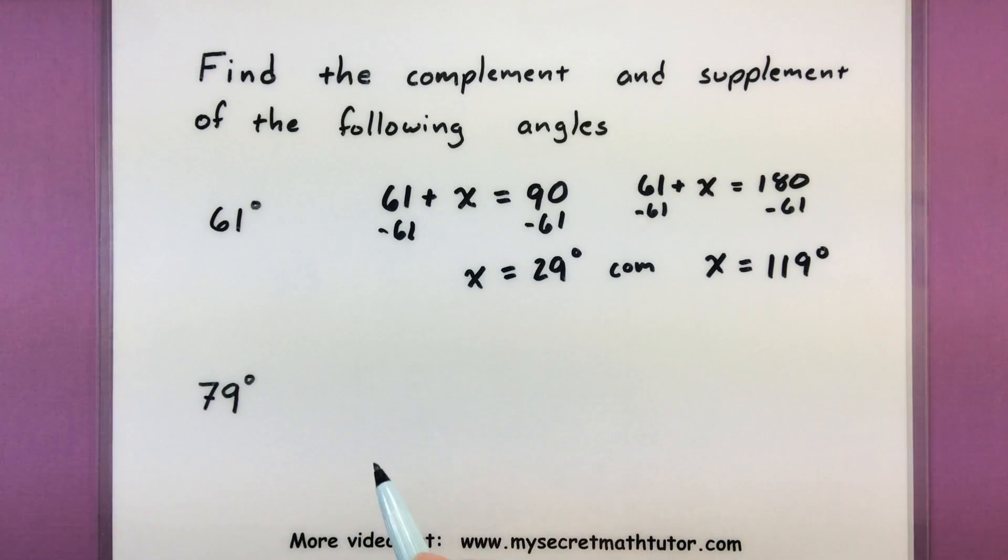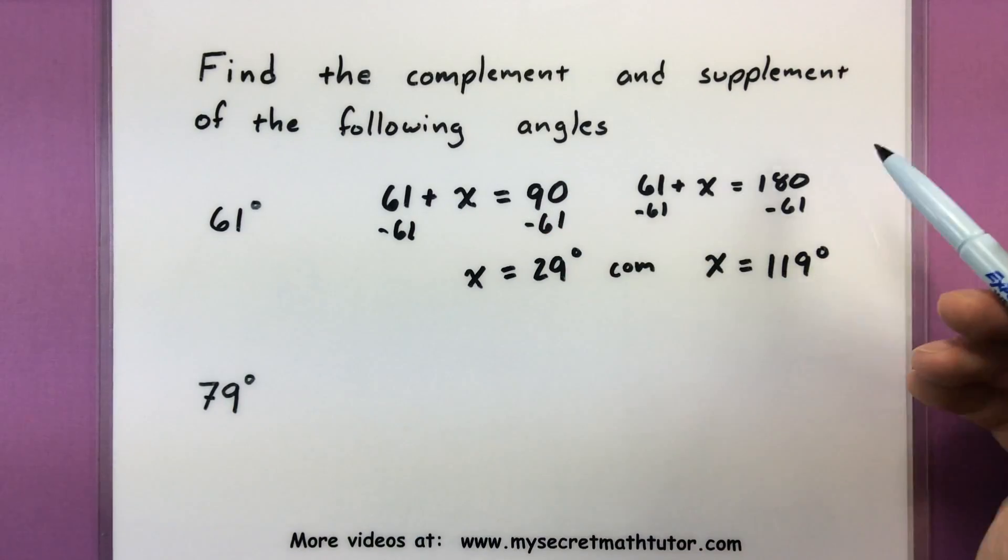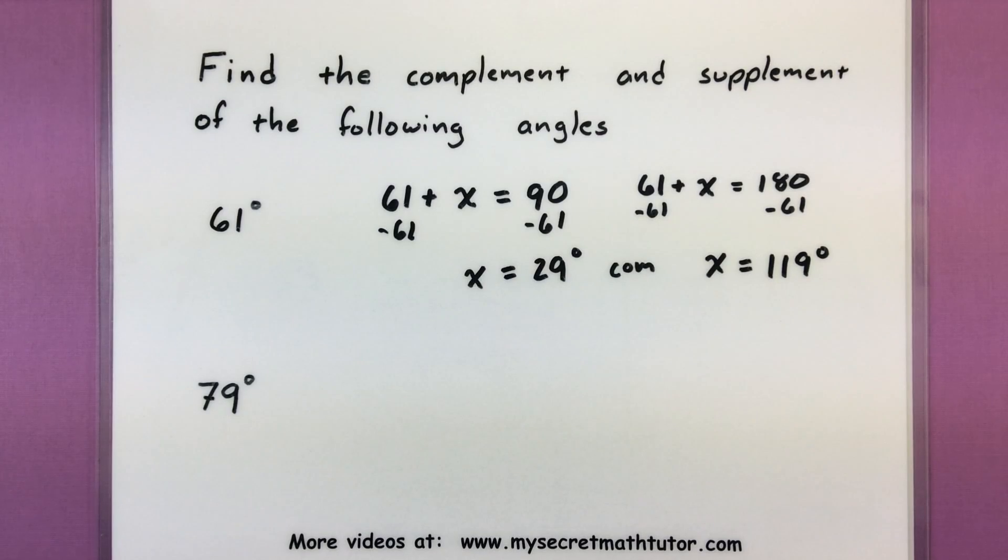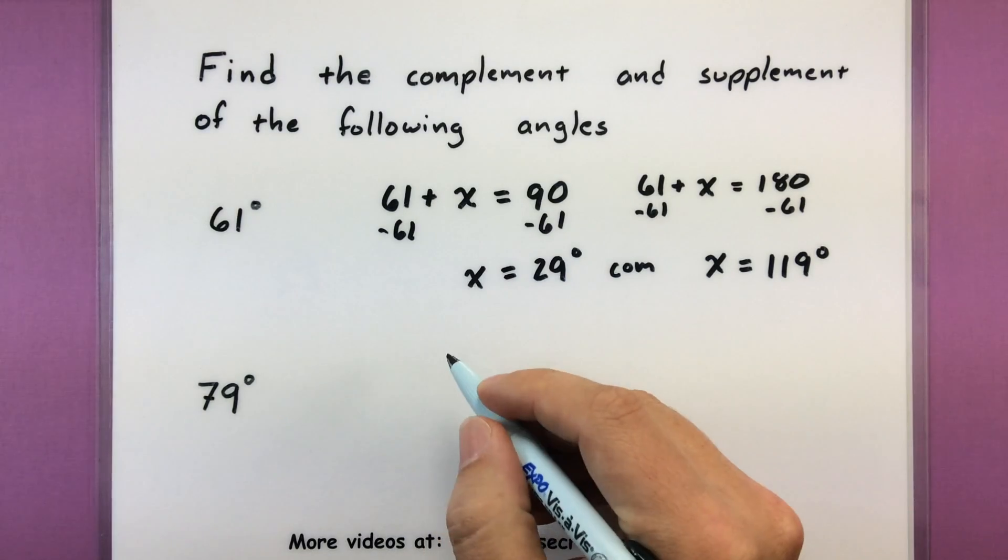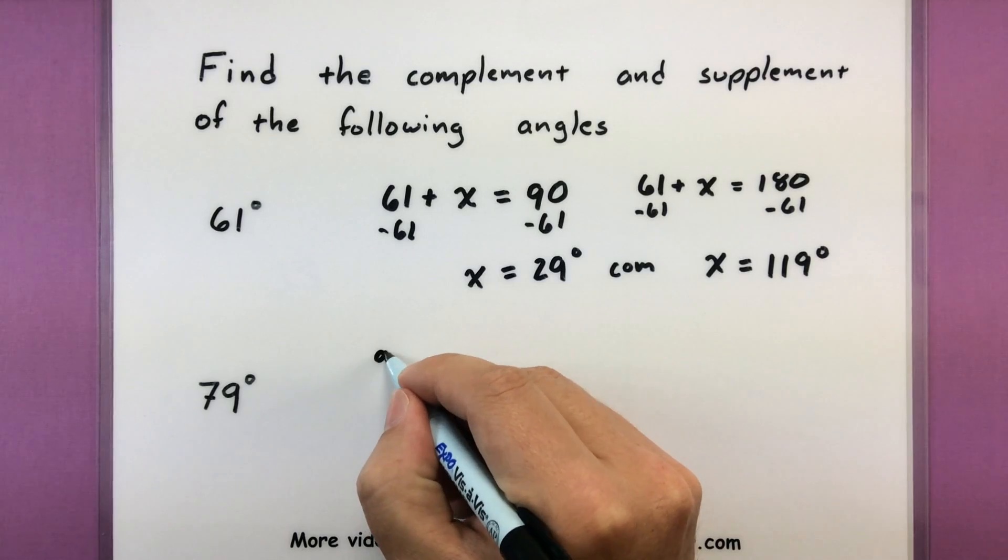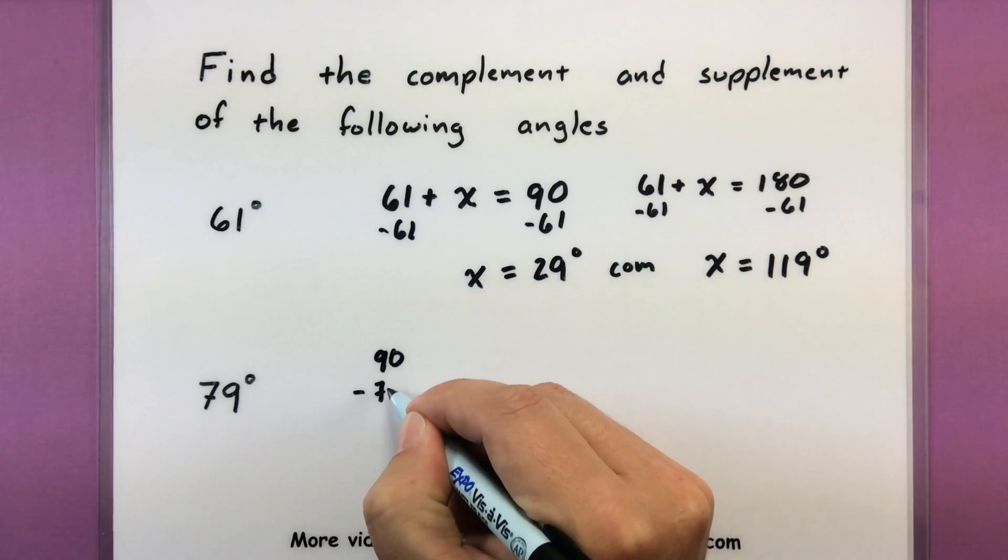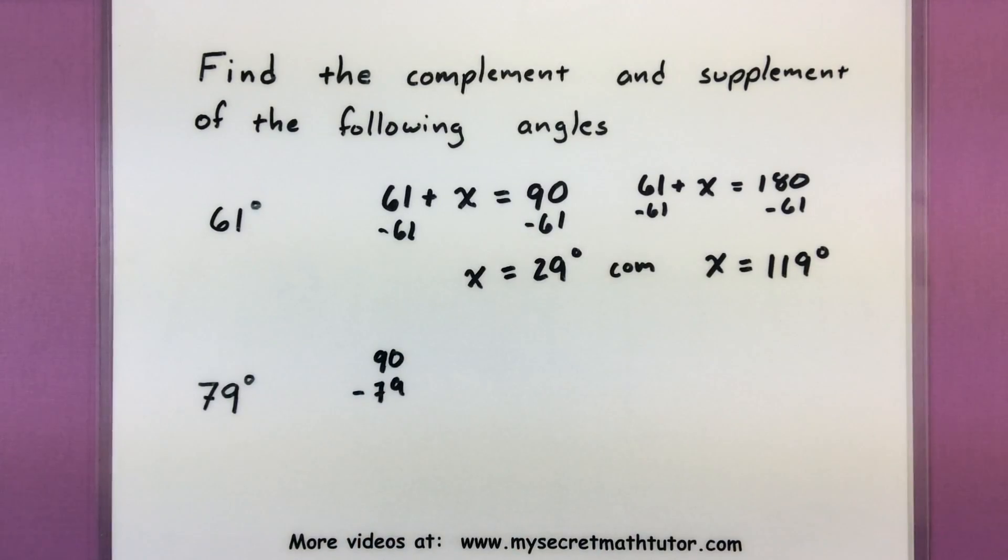Alright so now that you have the idea you can make this a little bit faster. You can see the shortcut is really just take 90 and subtract your angle or 180 and subtract your angle. So it makes it nice and quick. So moving on let's do the next one. I want to think of 90 minus 79. That should get my complement just fine.